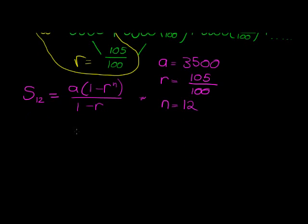So when I substitute all of this, I get 3,500 times (1 minus r), r is now this, I'm just going to write it simply as 1.05, 1.05 to the power of 12, divided by 1 minus 1.05.